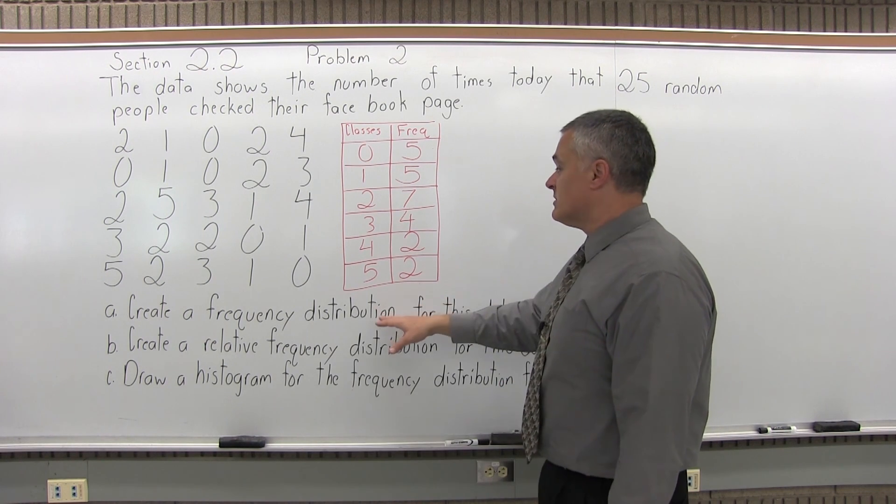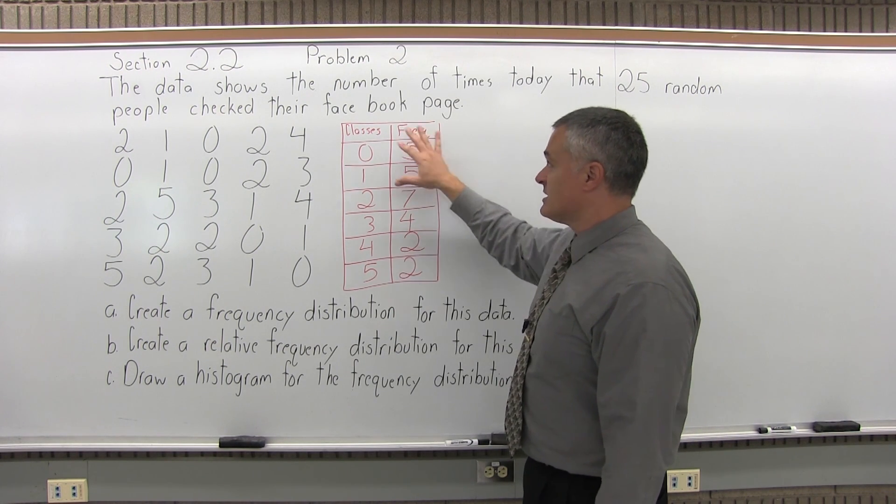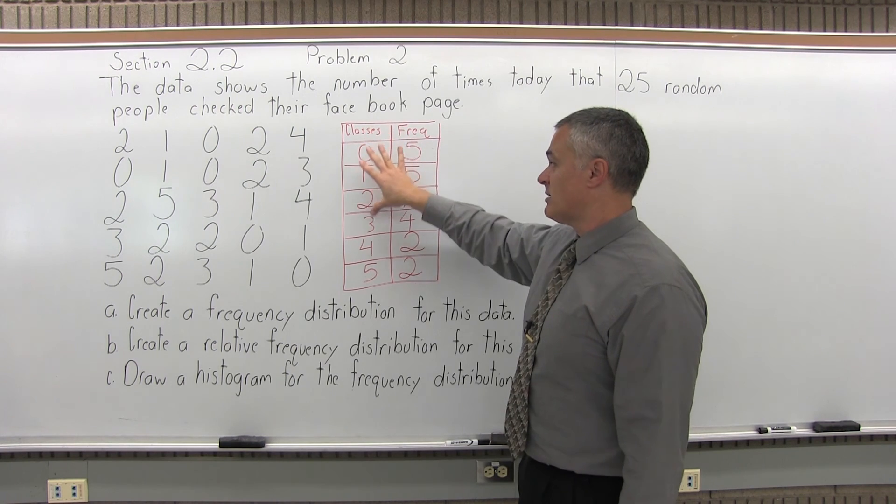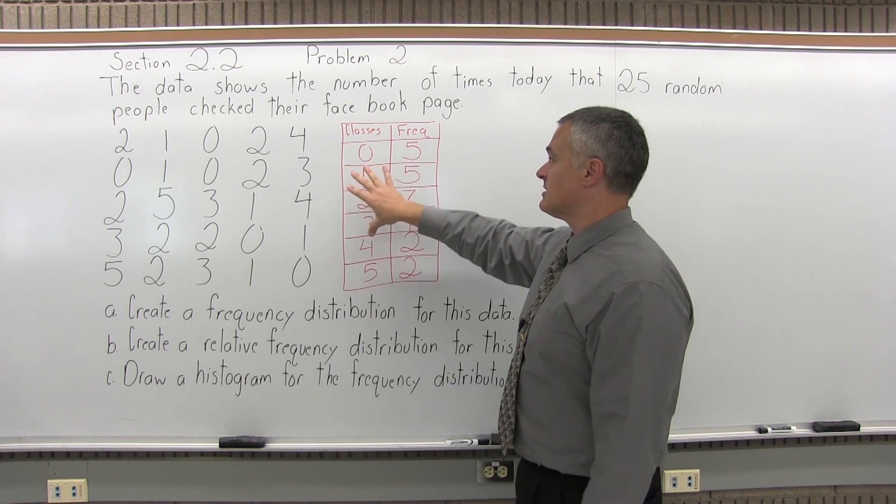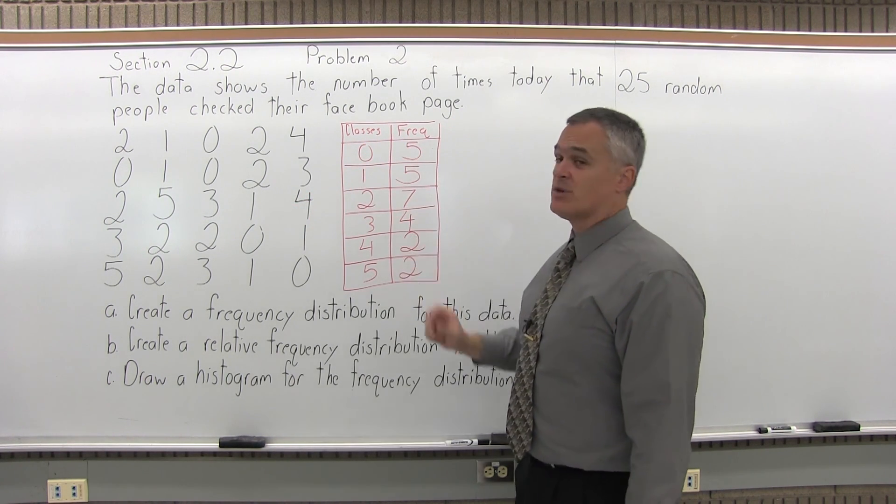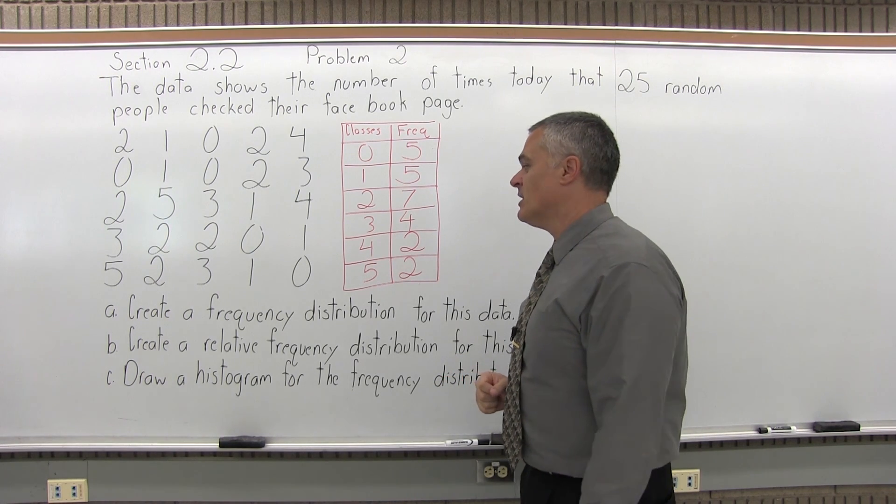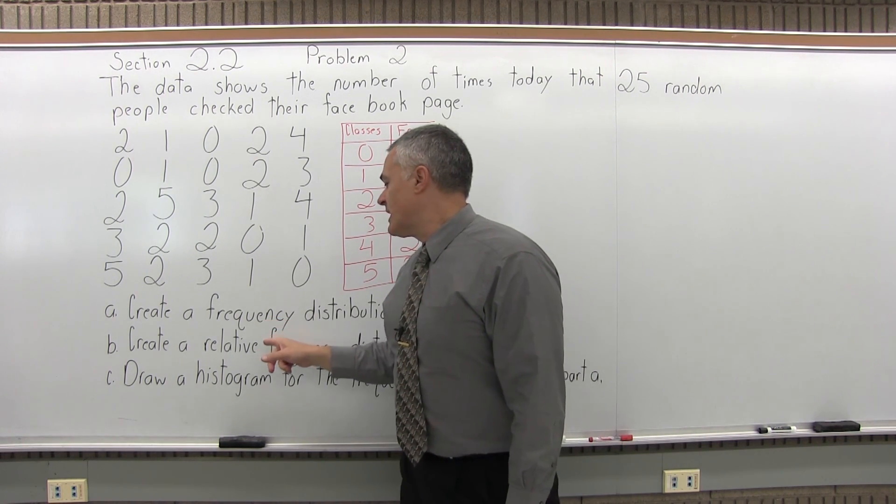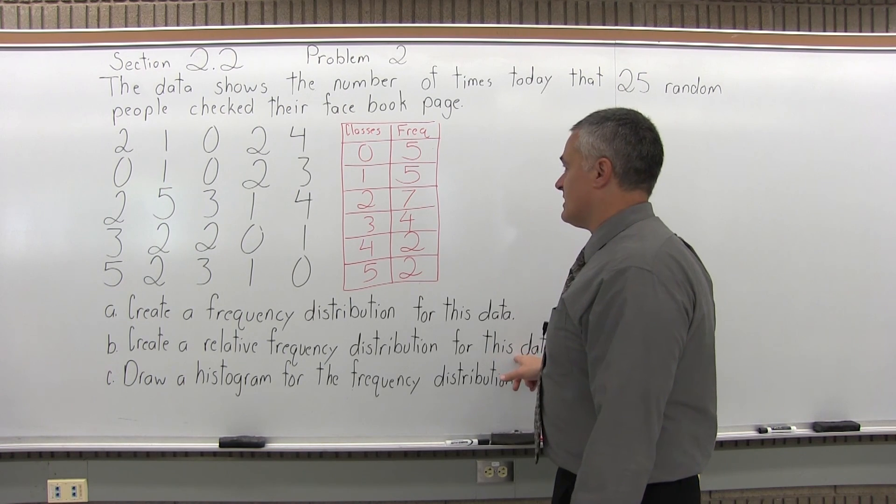So that's part A, frequency distribution. There's that frequency distribution, chart with two columns. First column lists the classes, different types of things that can happen, and the second column lists how many times each one of those happens, the frequencies. So B is create a relative frequency distribution for this data. So it's going to be the same chart with one more column at the end. It's going to have relative frequencies, each frequency over the total, which the total in this case is 25.